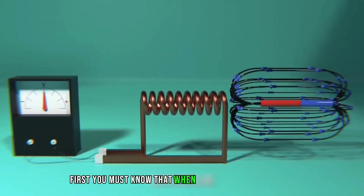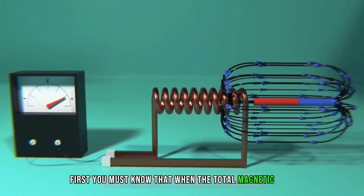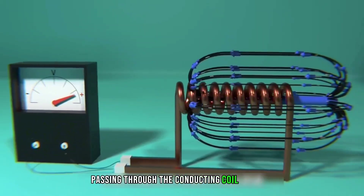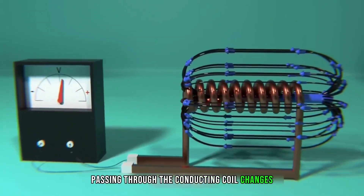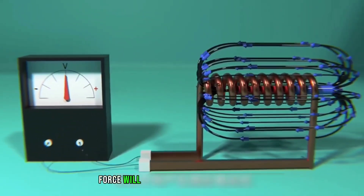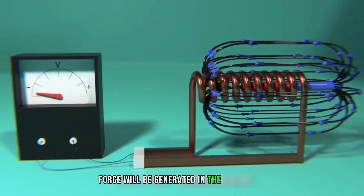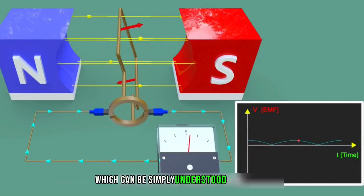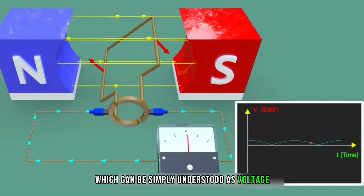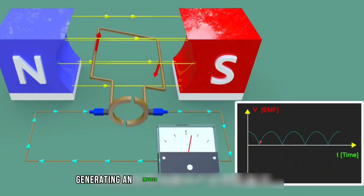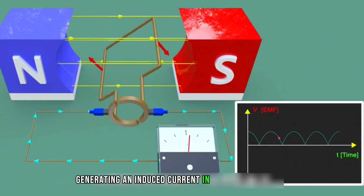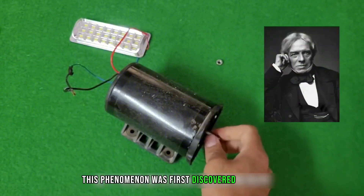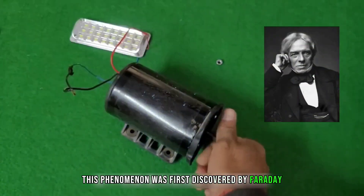When the total magnetic flux passing through the conducting coil changes, an induced electromotive force will be generated in the conductor, which can be simply understood as voltage, generating an induced current in the conductor coil. This phenomenon was first discovered by Faraday.